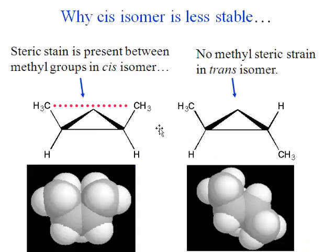Both of these molecules still have a lot of torsional strain — eclipsed bonds and a lot of angle strain. But with those methyl groups, the molecule does prefer them to not be on the same side of the ring.